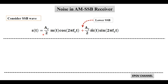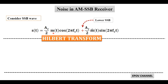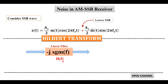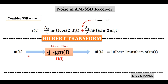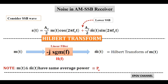In the SSB wave equation, also called the SSB suppressed carrier wave, m̂(t) is called the Hilbert transform of the message signal m(t). The Hilbert transform is a type of linear filter denoted by H(f), and it is a type of signum function, so H(f) equals minus j times the signum function — that is called the Hilbert transformer. For a given input m(t), the Hilbert transform output becomes m̂(t). Both the message signal and its Hilbert transform have the same average power, equal to P.